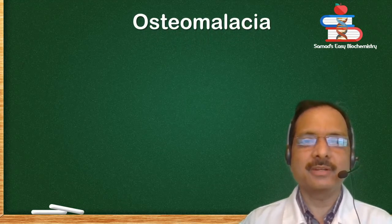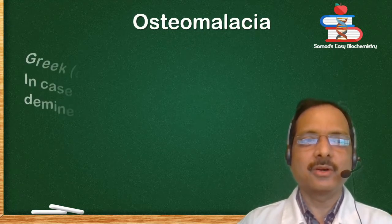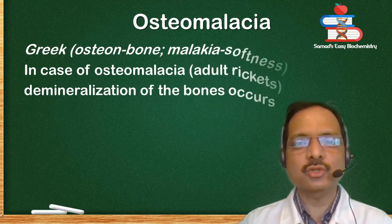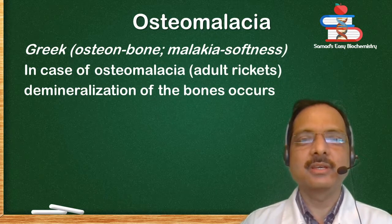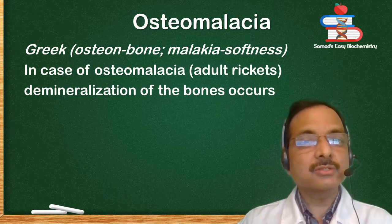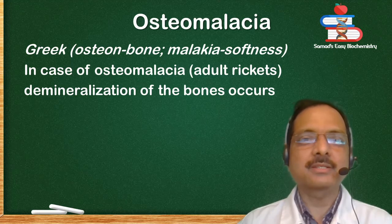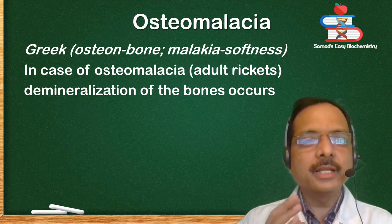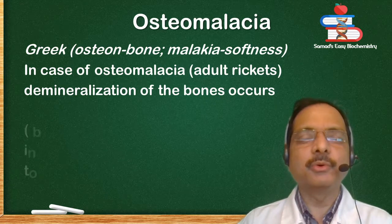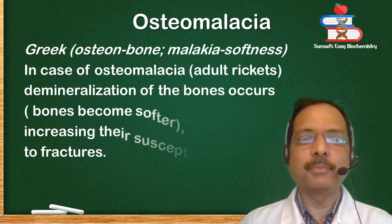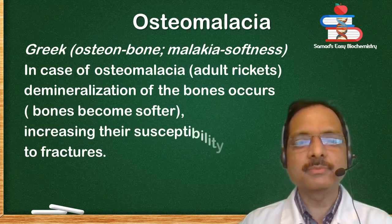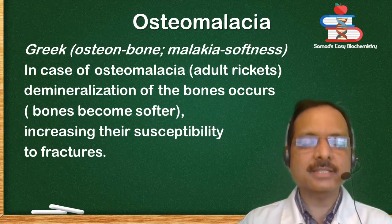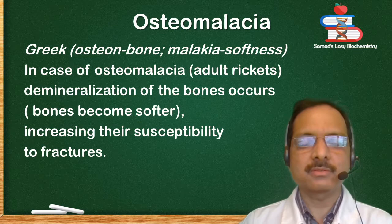Osteomalacia — obtained from the Greek 'osteon' (bone) and 'malacia' (softness). In the case of osteomalacia, also known as adult rickets, demineralization of bone occurs. The bone becomes softer, increasing its susceptibility to fractures.